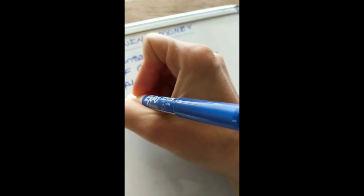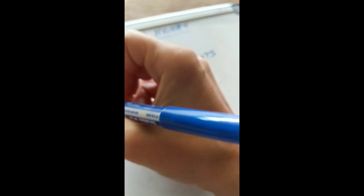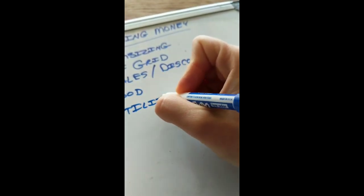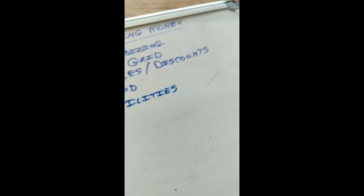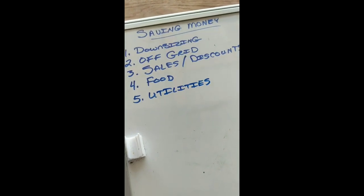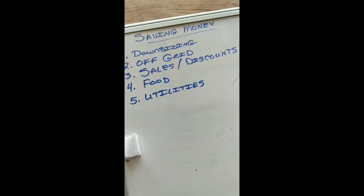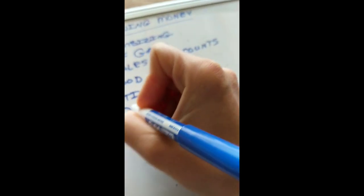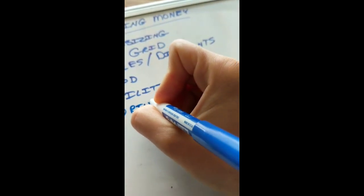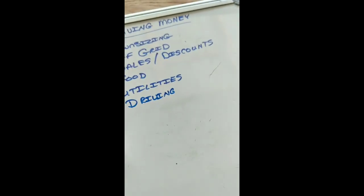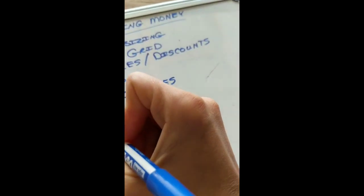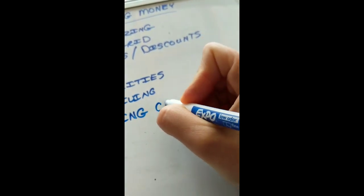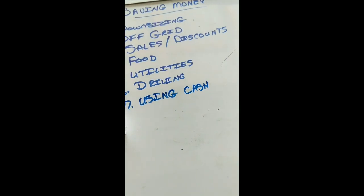Four would be how we save money on food. Five would be, I'm going to write this word and you're going to smile, because I just said we are off-grid, but utilities. I know all about utilities and the bills you have to pay and what you can do to save on that. Six would be driving, or the lack of it. And then seven, using cash. We save money by using cash.